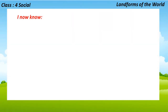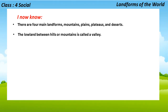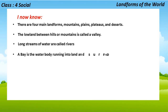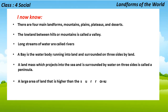Quick summary: There are four main landforms — mountains, plains, plateaus, and deserts. The lowland between hills or mountains is called a valley. Long streams of water are called rivers. A bay is a water body running into land and surrounded on three sides by land. A land mass that projects into the sea and surrounded by water on three sides is called a peninsula. A large area of land that is higher than the surroundings and more or less flat at the top is known as a plateau.